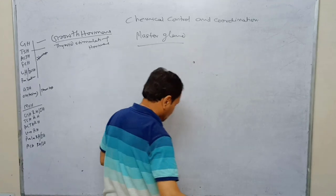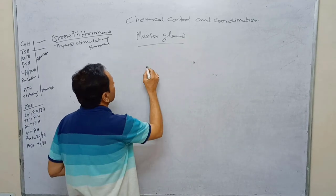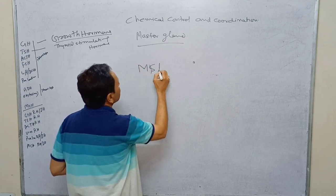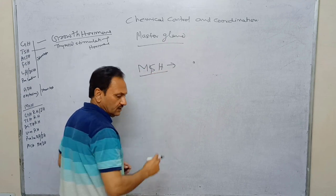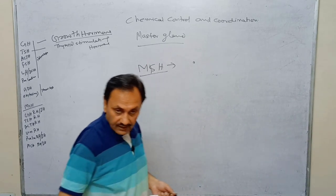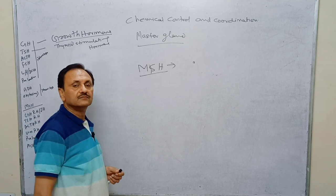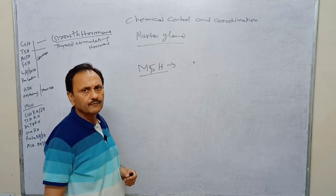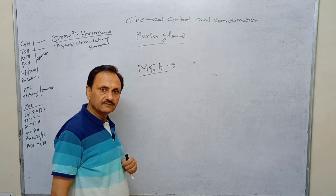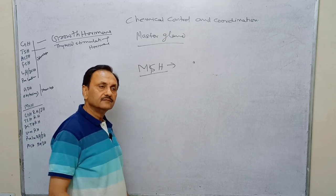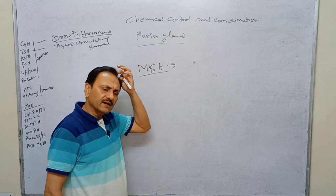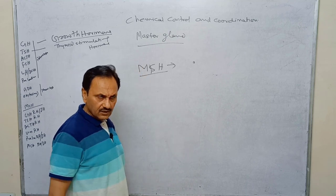Another hormone released from the pituitary is MSH — melanocyte stimulating hormone. Melanin pigments control the coloration of the body, and this is under the control of MSH. MSH is very much developed and prominent in amphibian species.